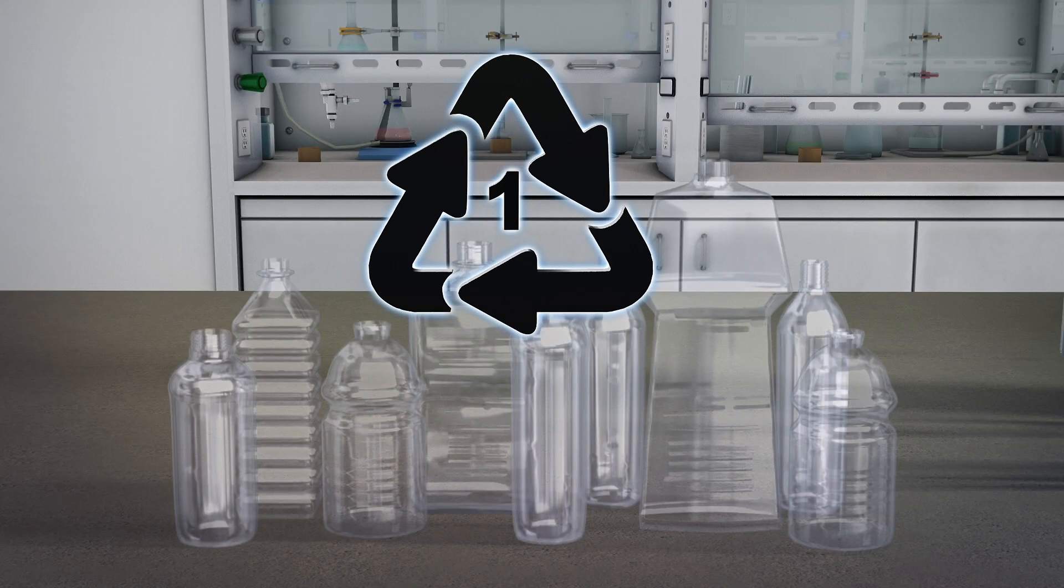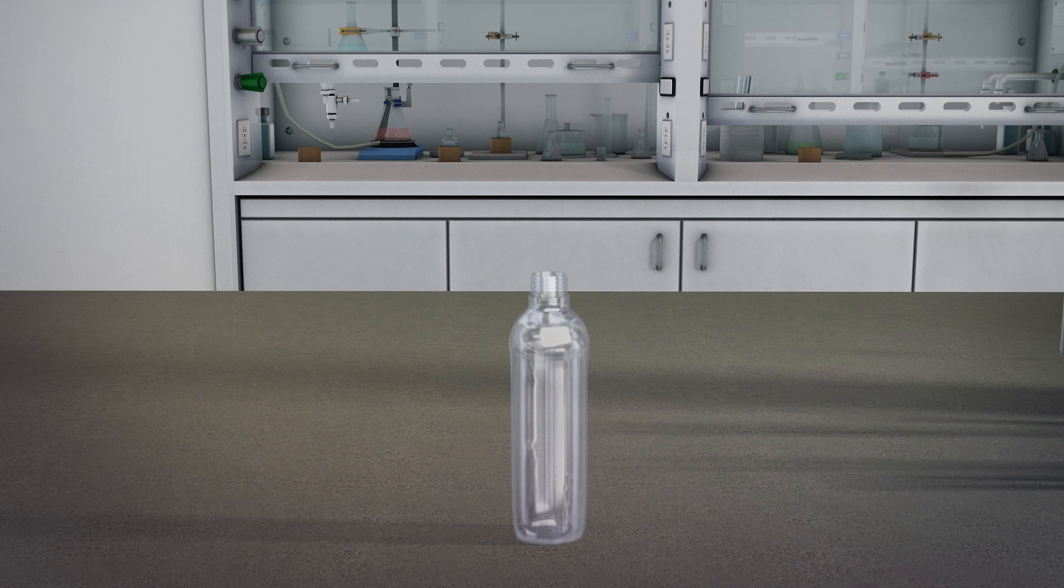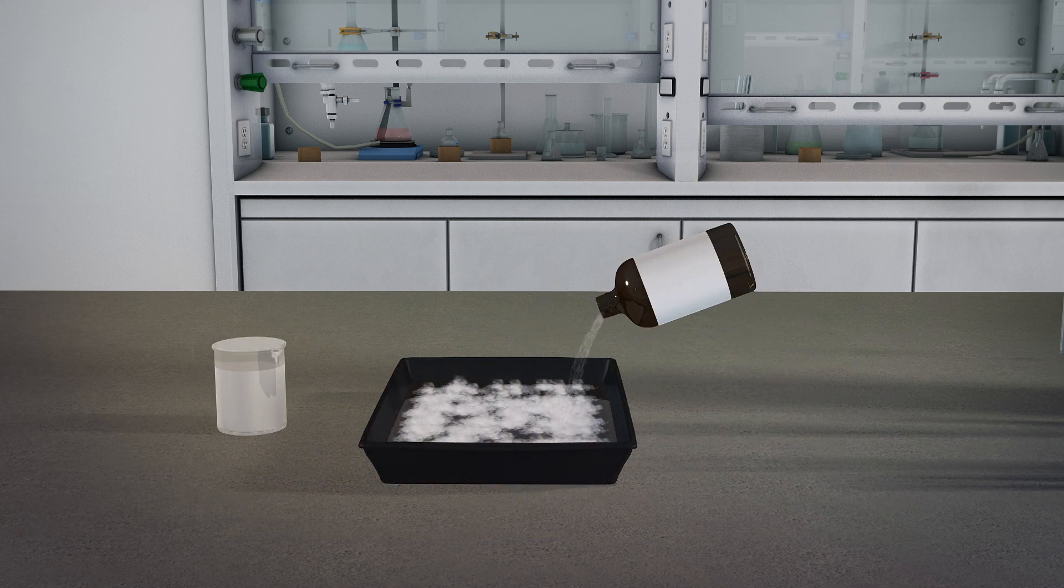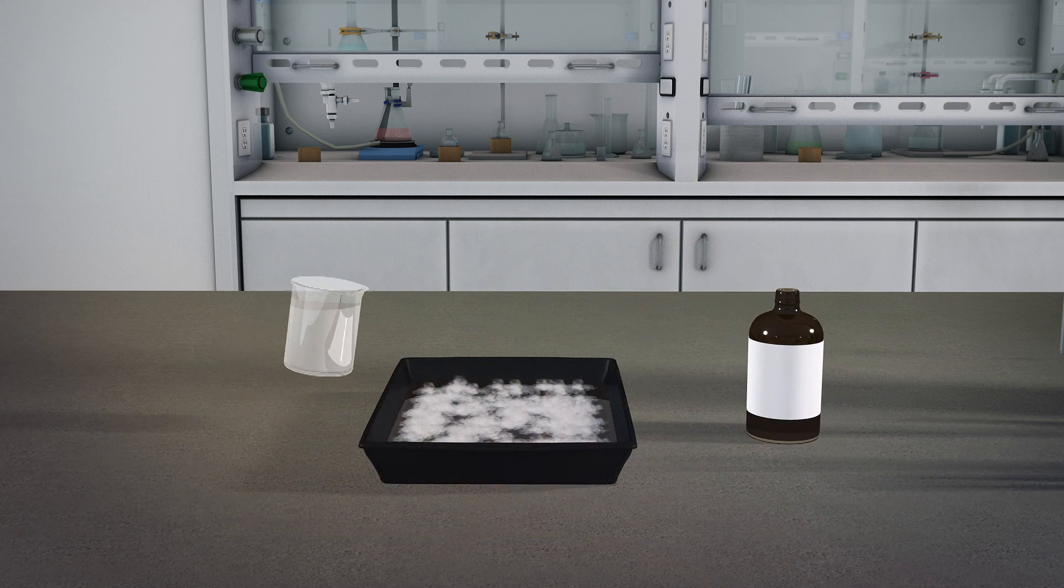PET plastic bottles are first shredded into fibers and combined with several chemicals including hydrochloric acid and polyvinyl acetate.